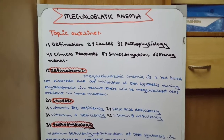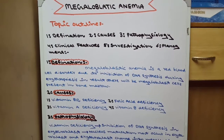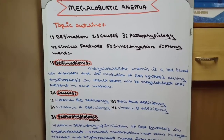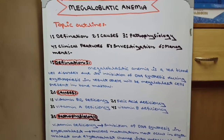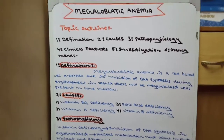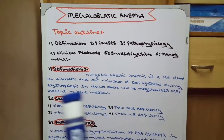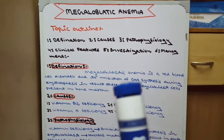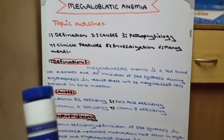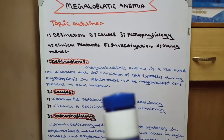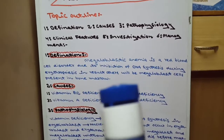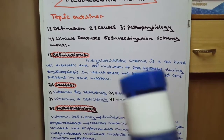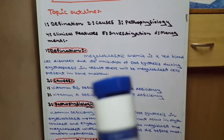Definition yeh hai: megaloblastic anemia ek red blood cell disorder hai jis mein DNA synthesis ki inhibition hoti hai. Jis ke nateeje mein bone marrow ke andar megaloblast cells present hote hain. In English: Megaloblastic anemia is a red blood cell disorder due to inhibition of DNA synthesis during erythropoiesis. As a result, there will be megaloblast cells present in the bone marrow.